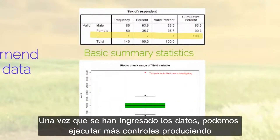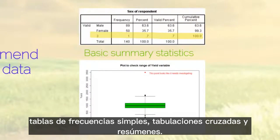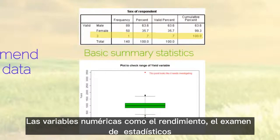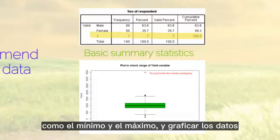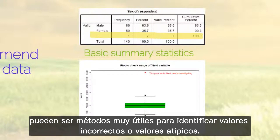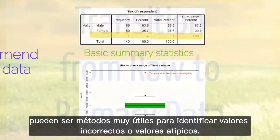Once the data has been entered, you can run further checks by producing simple frequency tables, cross-tabulations, and summaries. For numeric variables such as yield, examining statistics such as the minimum and maximum and plotting the data can be a very useful method of identifying incorrect values or outliers.